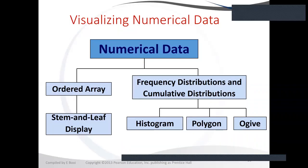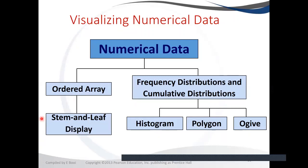We're going to start by looking at how to visualize numerical data. We can visualize numerical data by looking at the ordered array, which is ordering the data from lowest to highest. When we have the ordered array, we can display it using the stem and leaf plot. In the next section we will look at the frequency distribution, histogram, and polygon.